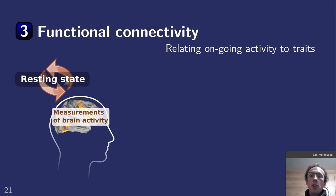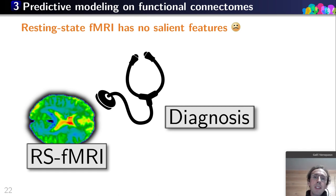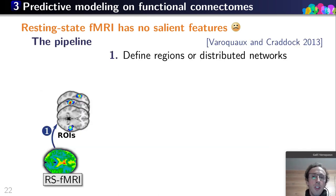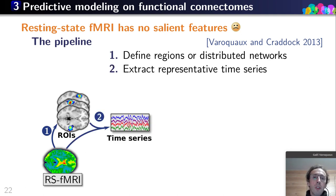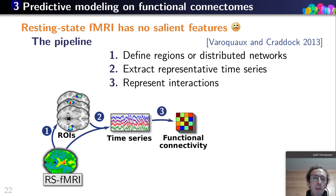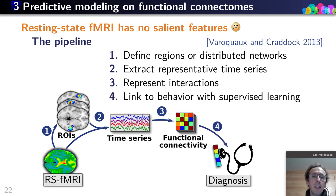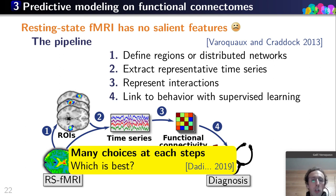I'd like to touch on how we can predict from functional connectivity. The challenge is to relate ongoing activity to behavioral traits. The first challenge is that resting state has no salient feature. A canonical pipeline has emerged: first define regions or distributed networks, then extract representative time series, then capture their interactions in an interaction matrix, and finally use supervised learning to link this matrix to behavior. There are many choices at each step — which one is best?